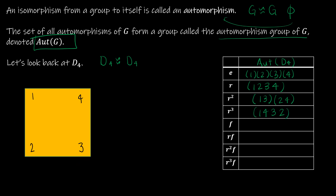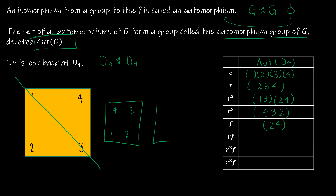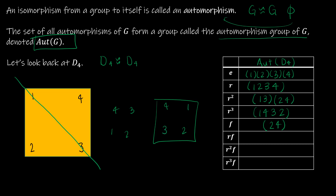Then we look at the flips. For F, 1 and 3 map to themselves and 2 maps to 4. For RF — rotating first — then flipping across that diagonal, we take out the middleman: 1 went to 4 and 4 went to 1, and 2 and 3 also swapped places.